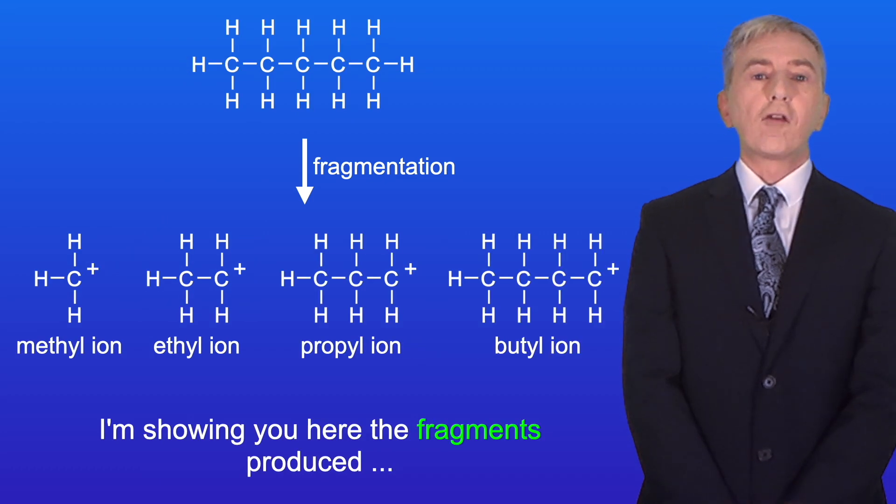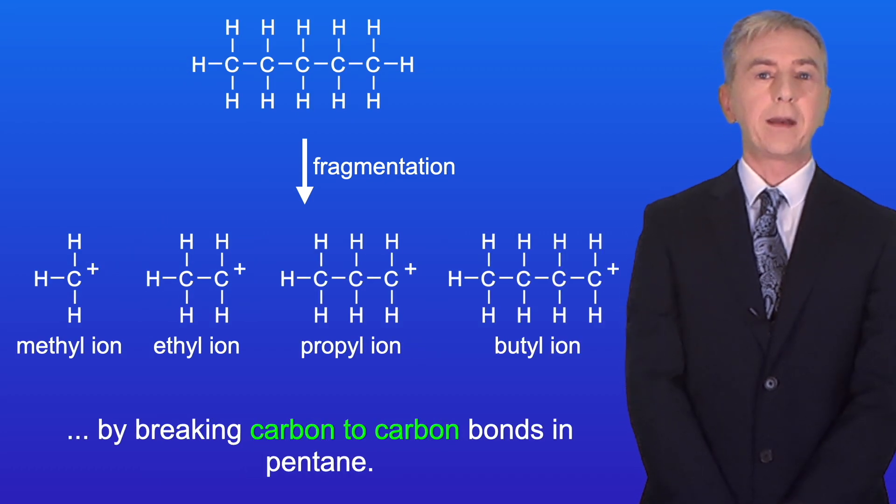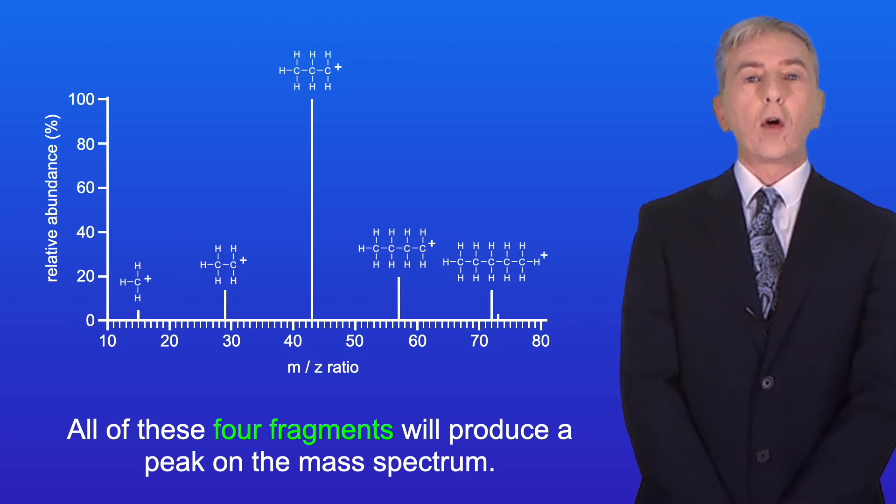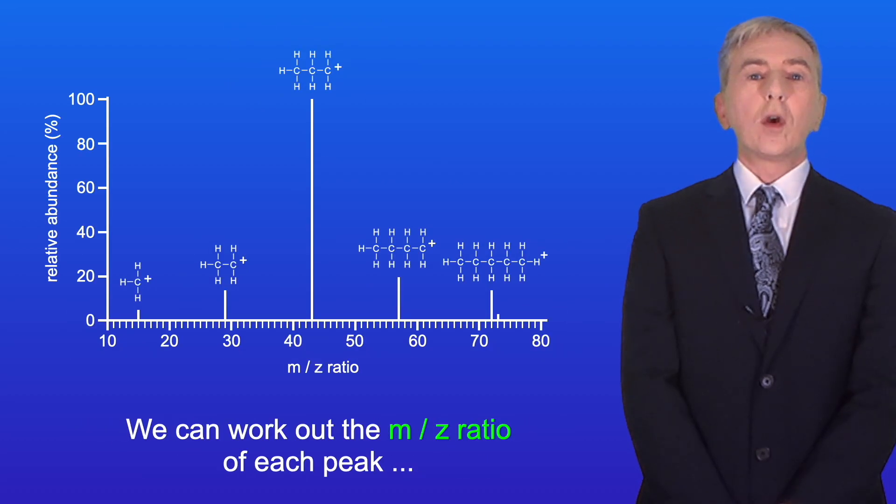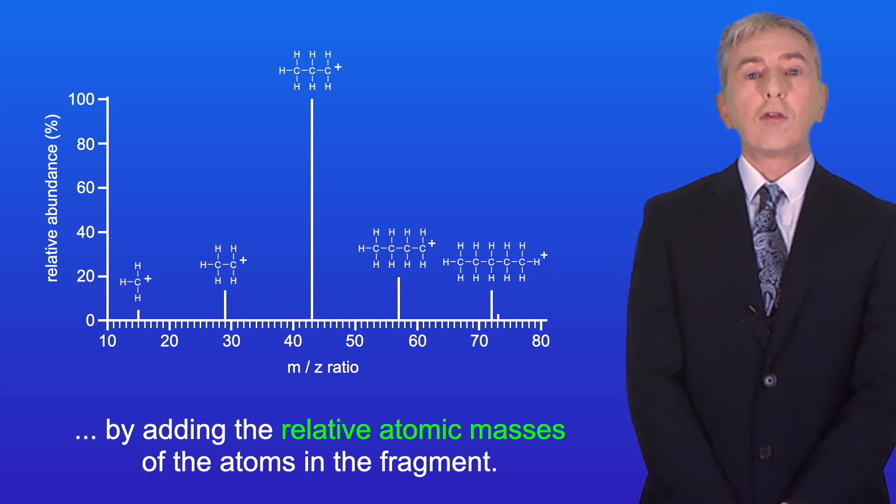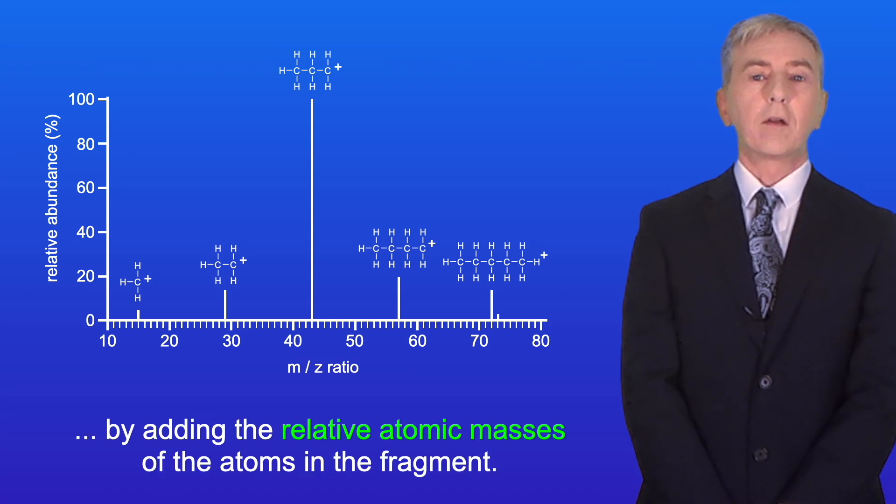I'm showing here the fragments produced by breaking carbon to carbon bonds in pentane. All of these four fragments will produce a peak on the mass spectrum. We can work out the m/z ratio of each peak by adding the relative atomic masses of the atoms in the fragment.